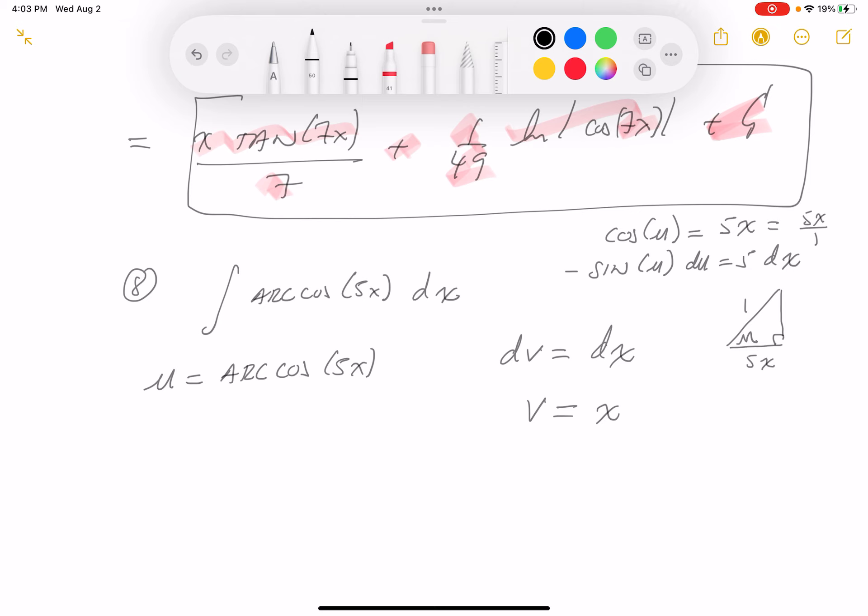What's the side that's opposed that? Let's take a look at that. That would be the root of 1 minus 25x squared. Alright?